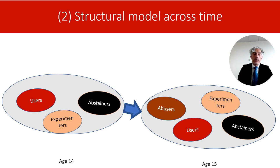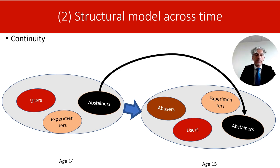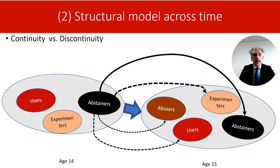It does so by considering the multinomial logistic regressions between latent classes at consecutive time points. For example, by regressing the latent classes at age 15 on those at age 14, we can investigate what are the associations between these patterns of behavior. In particular, if we consistently identify the same underlying classes at different time points — for example, abstainers — we can investigate continuity: what is the probability that abstainers at age 14 will remain abstainers at age 15? At the same time, the analysis can tell us about discontinuity: what is the probability that abstainers at age 14 will transition to a class characterized by other patterns of substance use, for example moving to the abusers class at age 15?